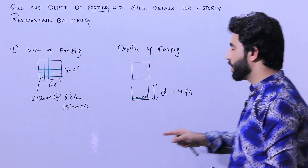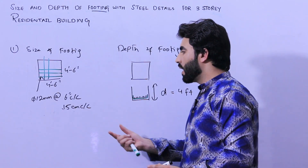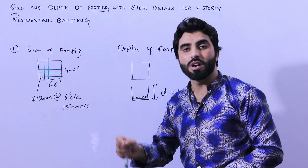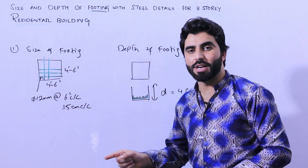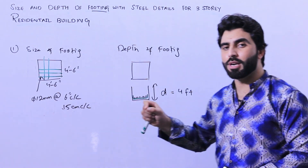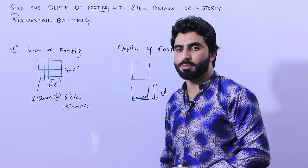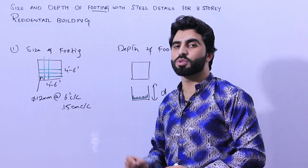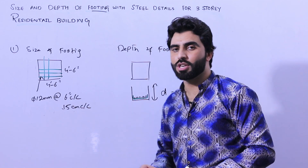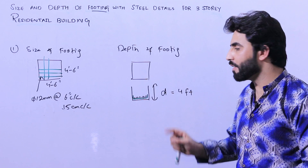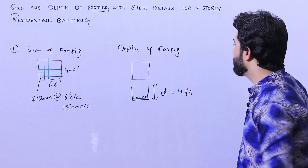This is the steel reinforcement. Provide a single mesh for a residential building. For a commercial building, you are not able to provide a single mesh — you should use a double mesh, and the steel reinforcement should be different from this one.